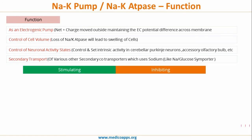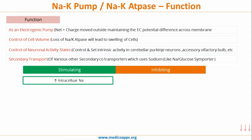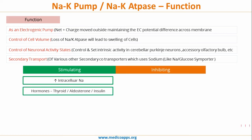The factors which stimulate the sodium potassium pump are increased intracellular sodium and hormones such as thyroid hormone, aldosterone, and insulin. The factors which inhibit the sodium potassium pump are congestive heart failure, chronic kidney failure, digitalis toxicity, and dopamine.